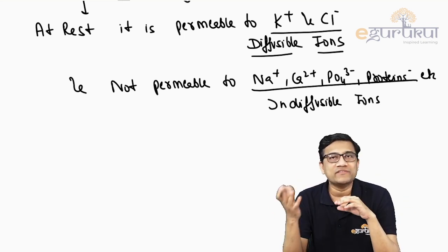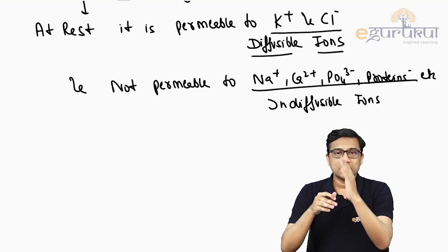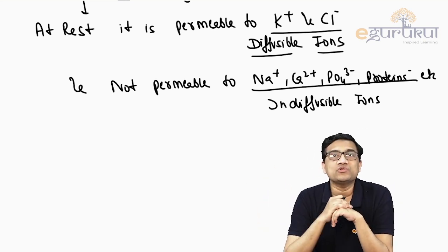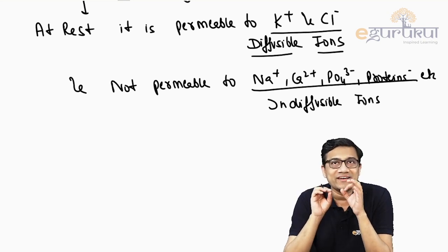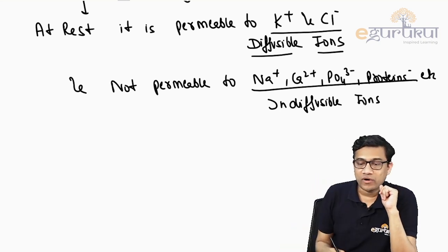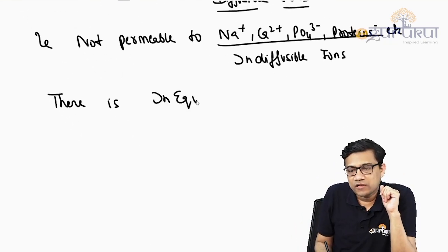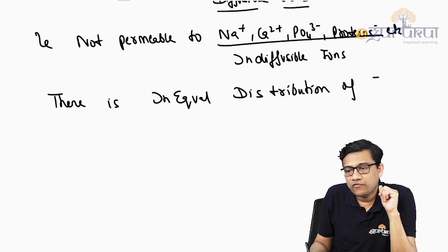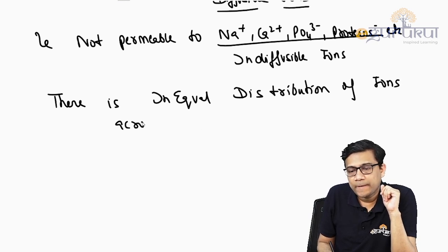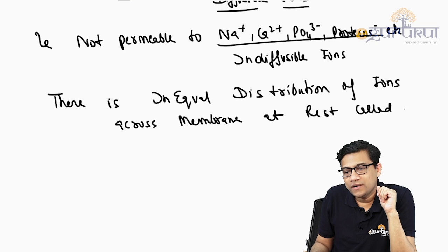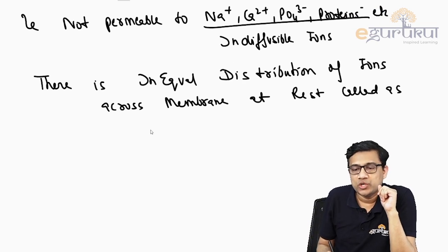Since charges always try to achieve electrical equilibrium — where total cations equal total anions — some ions cannot cross the membrane and remain on their side, but they affect the distribution of other ions. As a result, we get an unequal distribution of almost every ion across the membrane at rest, which is called the Gibbs-Donnan equilibrium.